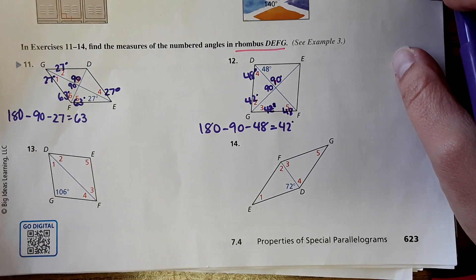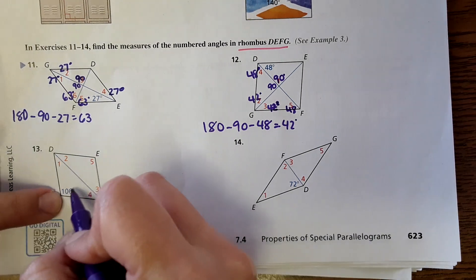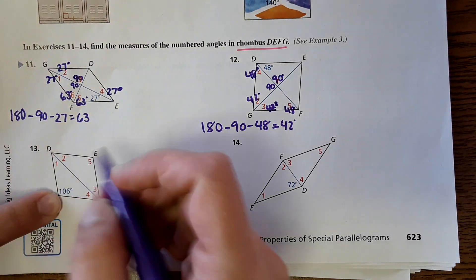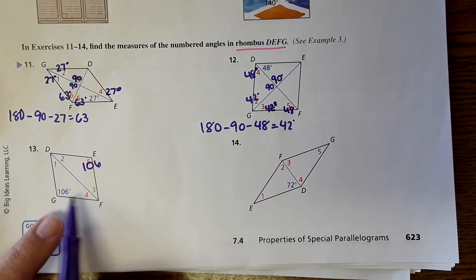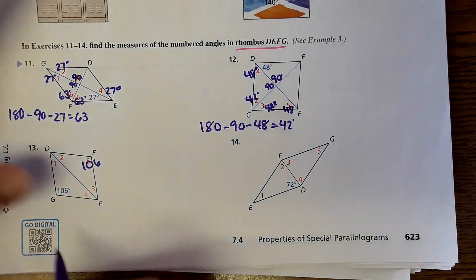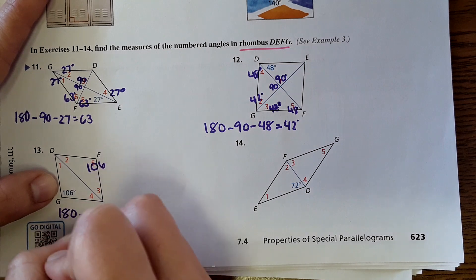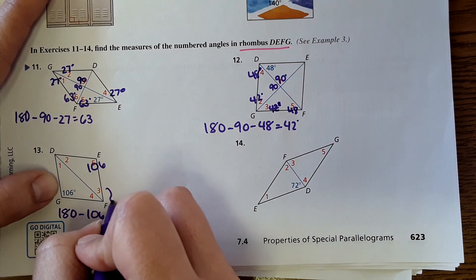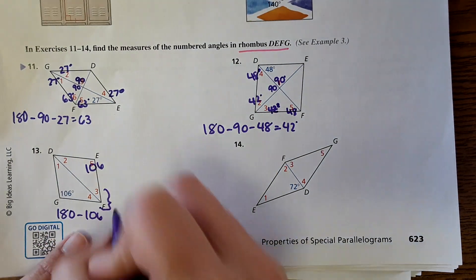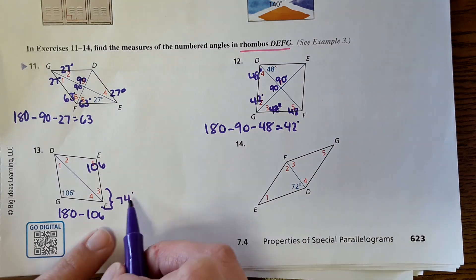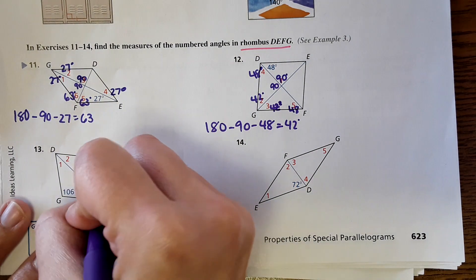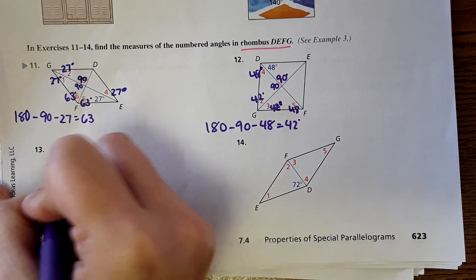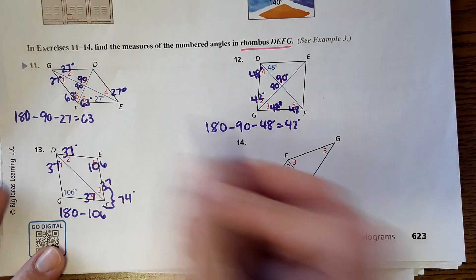13. Just continuing this whole thing. It's a parallelogram, so opposite angles are equal. This would have to be 106. In a parallelogram, consecutive angles are supplementary. So I can do 180 minus 106 to get this whole thing, which that would be 74. And then 74 divided by 2 would give me each one of those. So it would be 37, 37. Then this would also have to be 37. And this would have to be 37.